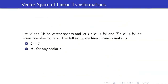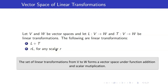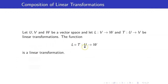Suppose that we have two linear transformations from V to W — call those L and T. If we add L and T they will again be a linear transformation, and if we multiply any linear transformation by a scalar it will also be a linear transformation. This is saying that the set of all linear transformations from V to W forms a vector space under function addition and scalar multiplication. Moreover, the composition of two linear transformations is again a linear transformation.